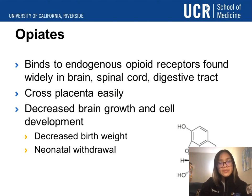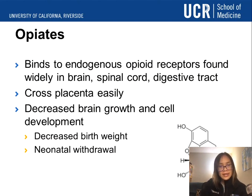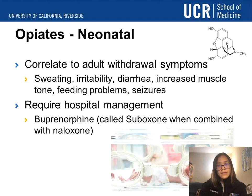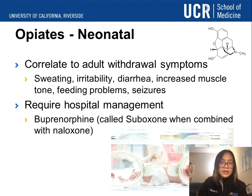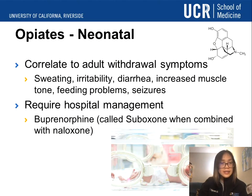Next, opiates, which bind to endogenous opioid receptors found widely in the brain, spinal cord, and even in our digestive tract. Opiates cross the placenta very easily, and since the placenta nourishes the fetus, opiates can decrease brain growth and cell development. We see this with decreased birth weight and neonatal withdrawal. Babies can have sweating, irritability, diarrhea, increased muscle tone, feeding problems, and seizures immediately after birth — this can be pretty dangerous and require hospital management. Some newborns will require buprenorphine, also called Suboxone when combined with naloxone, which is a safer alternative to slowly wean them off opiates over time and reduce withdrawal effects.